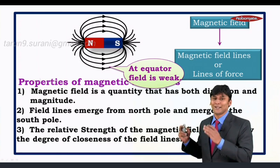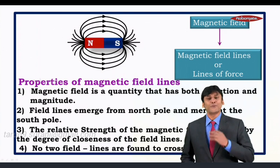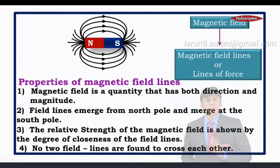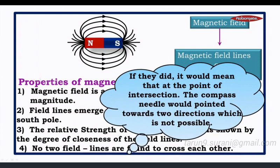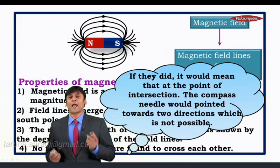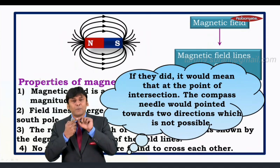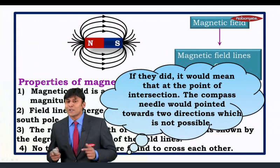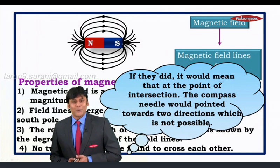The fourth property states that no field lines are found to cross each other. If two lines actually crossed, it would mean that at the point of intersection the compass needle would point in two directions simultaneously, which is not possible. Therefore, two lines of force can never cross each other's path. These were the properties of magnetic field lines.